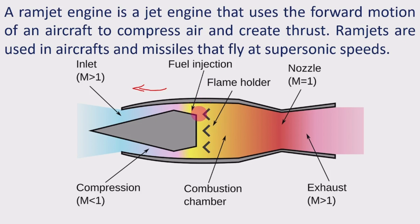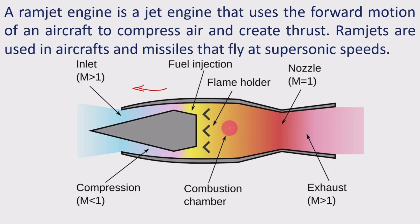As soon as fuel enters, it is ignited and combusted in the combustion zone. A flame holder is also provided in order to arrest the flame. The burned flue gases produced after combustion have higher pressure and temperature, and those move to the nozzle, which is a converging and diverging section with a throat.